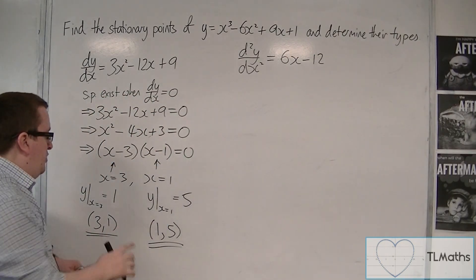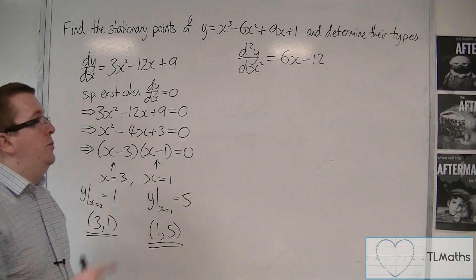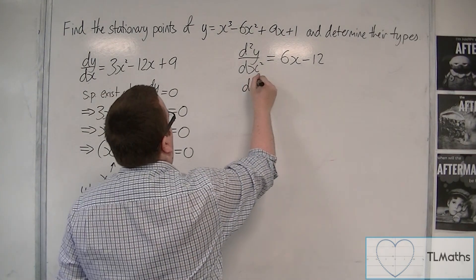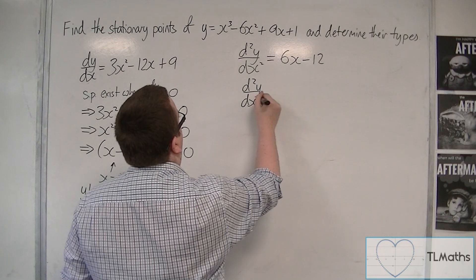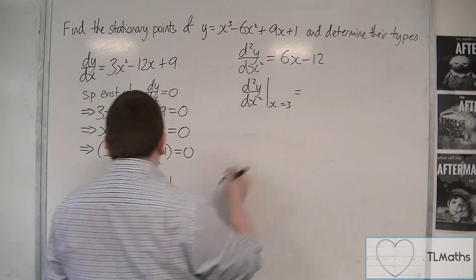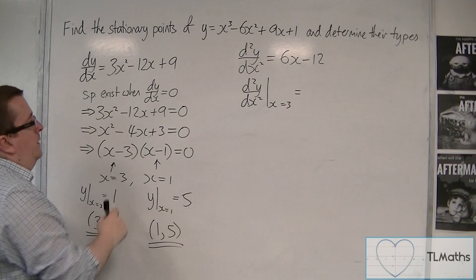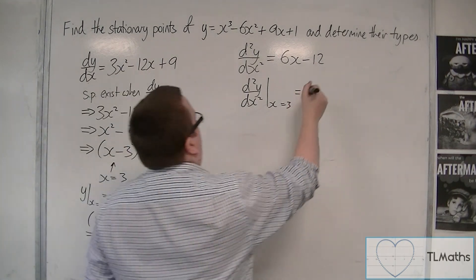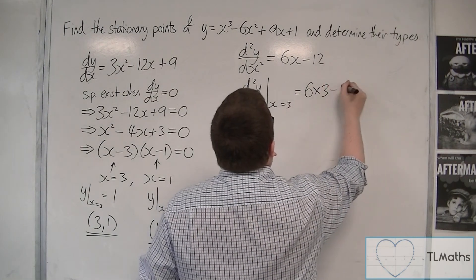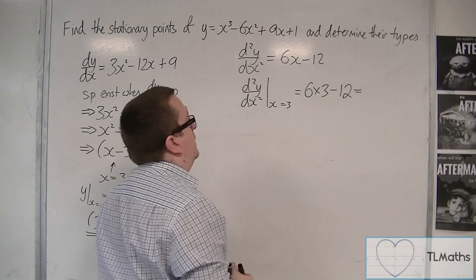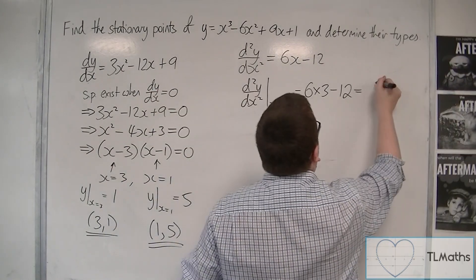Now, I need to substitute the x values of these into the second derivative. So d²y/dx² when x equals 3, substituting that in, is 6(3) - 12. So that's 18 - 12, which is 6.